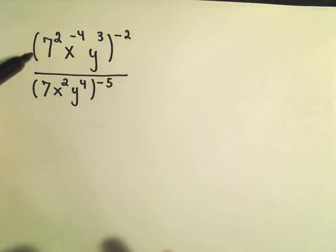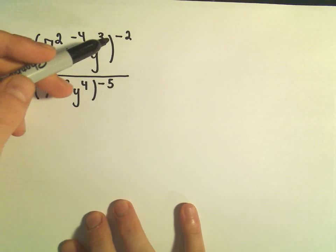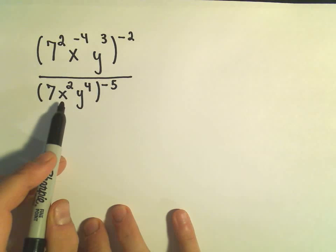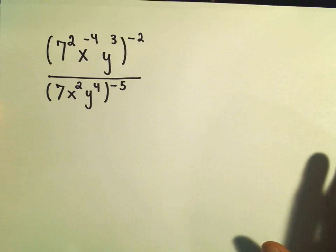So the first one here, inside the parentheses we have 7 squared, x to the negative 4th, y to the 3rd. That's all being raised to the negative 2nd power. And then that's divided by 7x squared, y to the 4th, all raised to the negative 5th power.